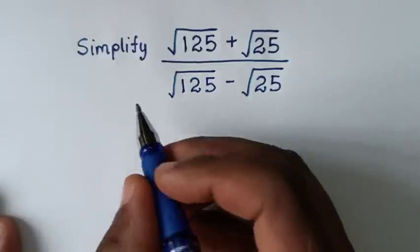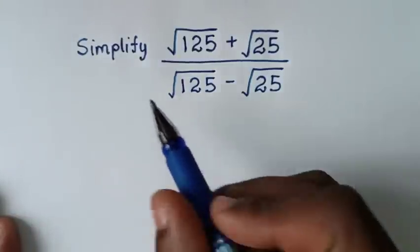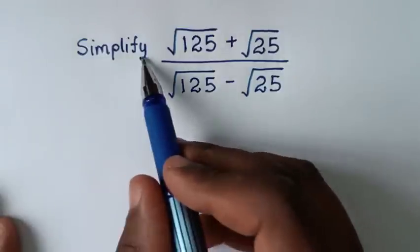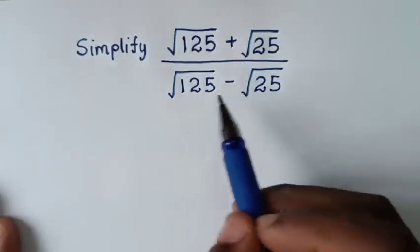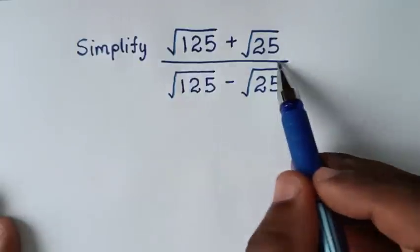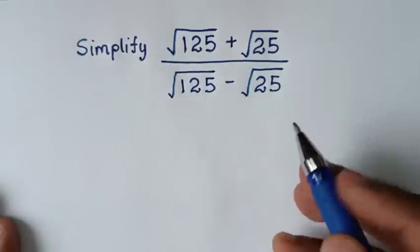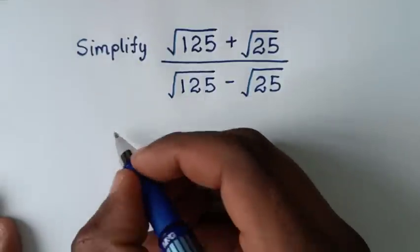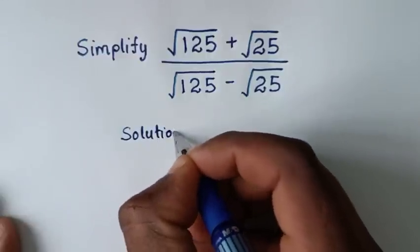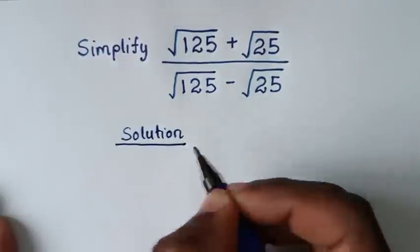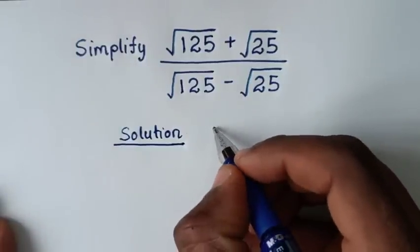Welcome. We are going to solve this math problem of simplifying square root of 125 plus square root of 25, over square root of 125 minus square root of 25. We have two methods for the solution.